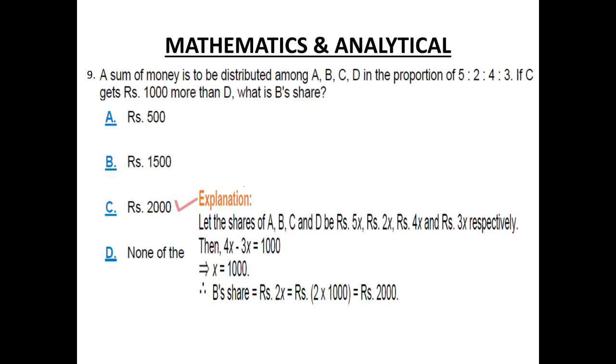Now, if C gets Rs. 1000 more than D, that means 4x minus 3x equals 1000. So X equals 1000. That means the value of X is 1000. So B's share will be 2x, 2 into 1000 equals Rs. 2000. Very easy.